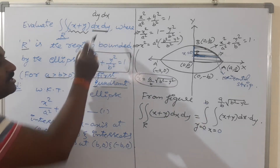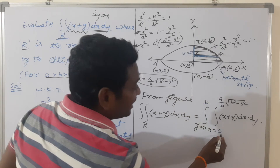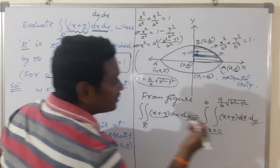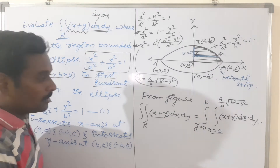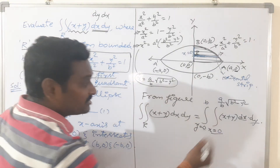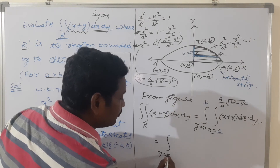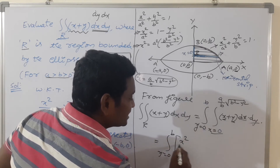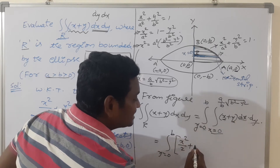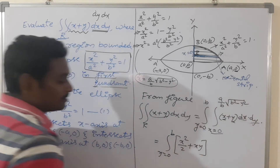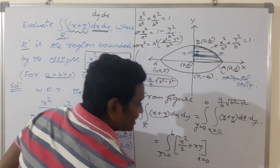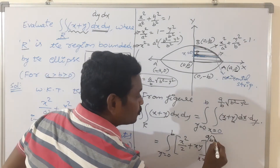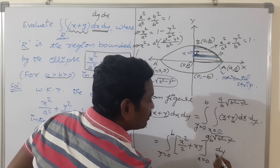If the order of integration is dx dy, the inner integral should have x limits, because first we find the integration with respect to x, and after that we take the integration with respect to y. Now write the integration: integral from y = 0 to b of the integral from x = 0 to (a/b)√(b² − y²) of (x + y) dx dy.